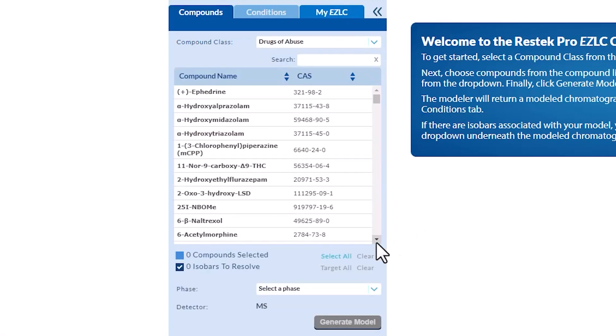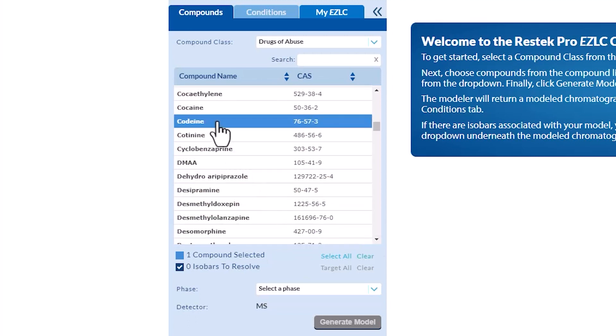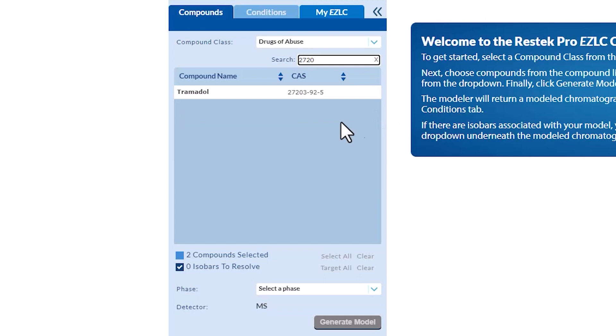You can select your specific compounds of interest by scrolling through the table and clicking on them. The compound row will turn blue when selected and can be unselected by clicking again. You can also use the search box above the table to find compounds by typing their name or CAS number.